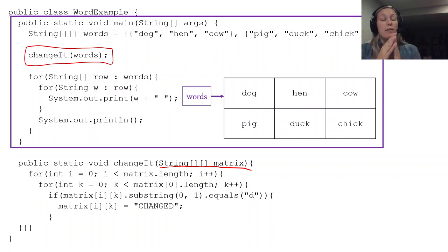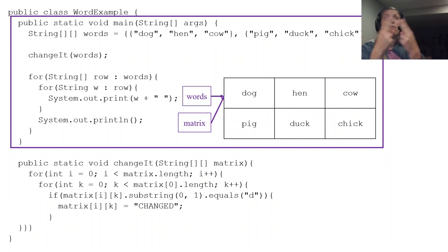Now when that happens, a new reference is created called matrix. And when you have references set equal to each other, remember that you are telling them to point in the same location.